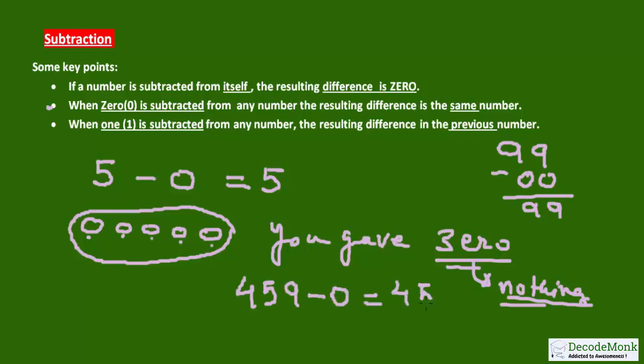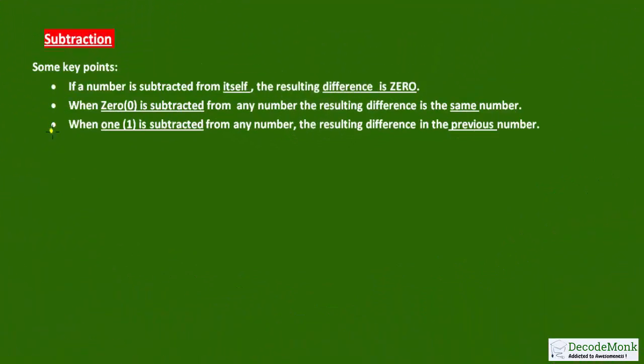Similarly, you take any number: 99 minus 0 is 99, 459 minus 0 is 459. You can arrange these minuend and subtrahend either horizontally or vertically like this. So you may write anything: 100 minus 0, you will give nothing out of 100, so you are left with 100.